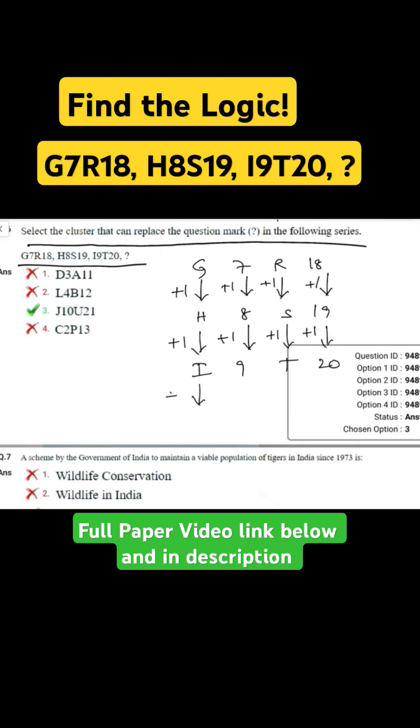So the next series will be I plus 1 equals J, 9 plus 1 equals 10, T plus 1 equals U, and 20 plus 1 equals 21. The answer is J10U21, which is option number 3.